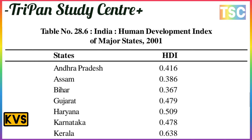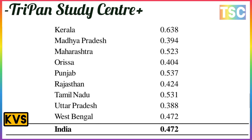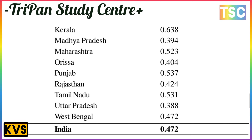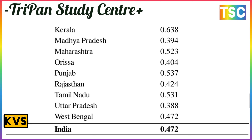Kerala has the highest HDI at 0.638, while Bihar is the lowest at 0.367. Madhya Pradesh is 0.394, Maharashtra is 0.523, Odisha is 0.404, Punjab is 0.537, Rajasthan is 0.424, Tamil Nadu is 0.531, Uttar Pradesh is 0.388, and West Bengal is 0.472. India's average HDI is 0.472.